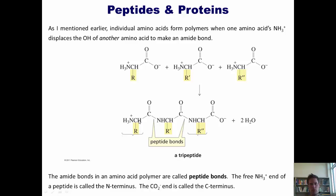A couple more terms here. The free NH3+ at this end is called the N-terminal amino acid, and this end of this amino acid chain is called the N-terminus. This end over here is called the C-terminal amino acid, and this end over here is called the C-terminus. Where did they come up with that?